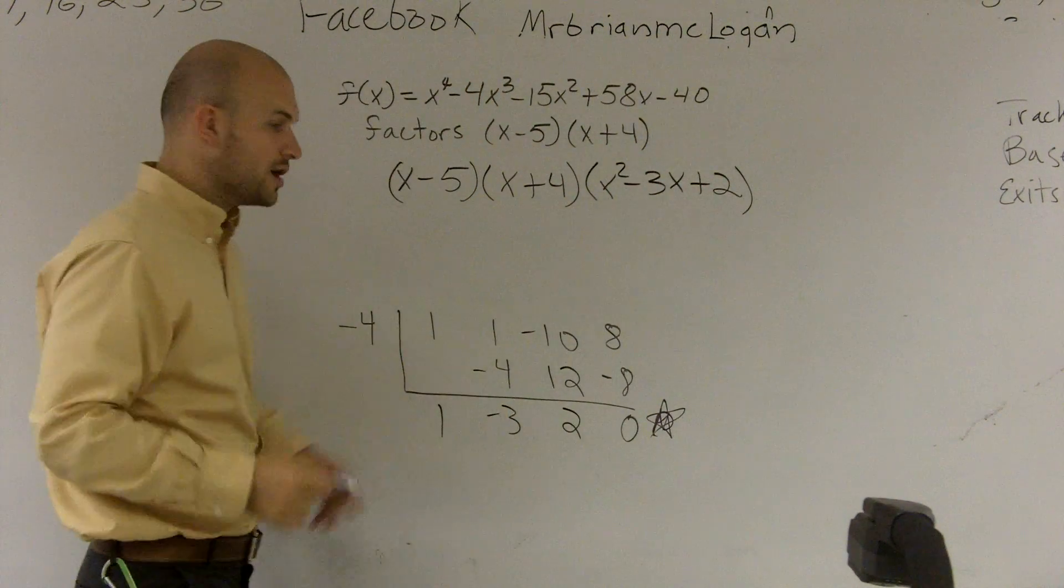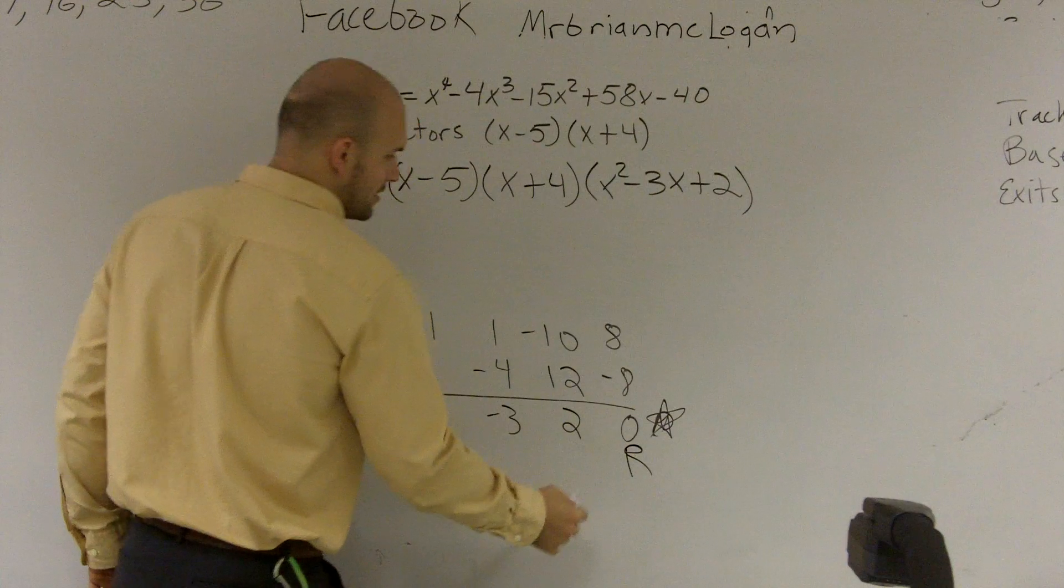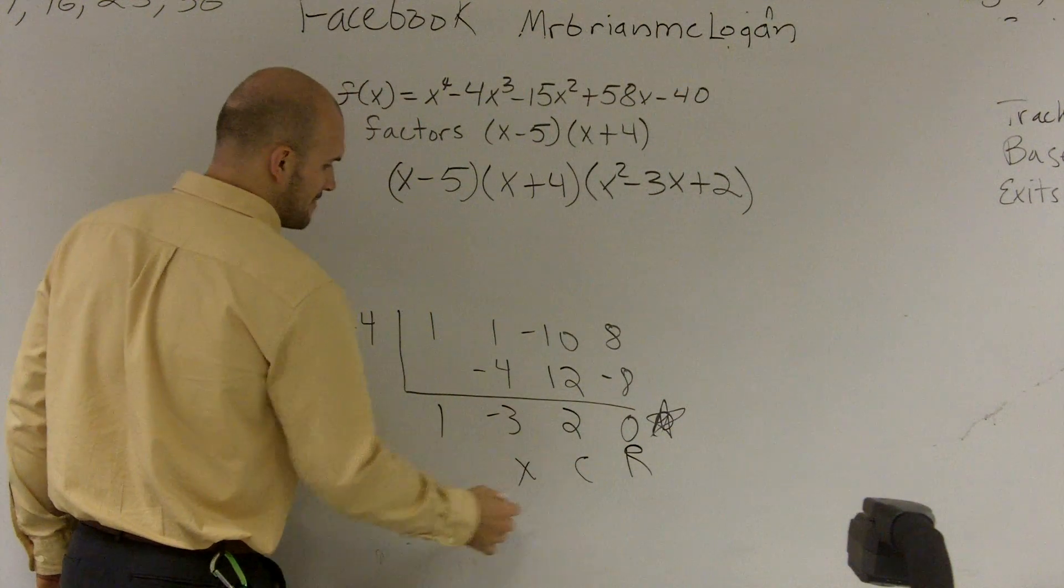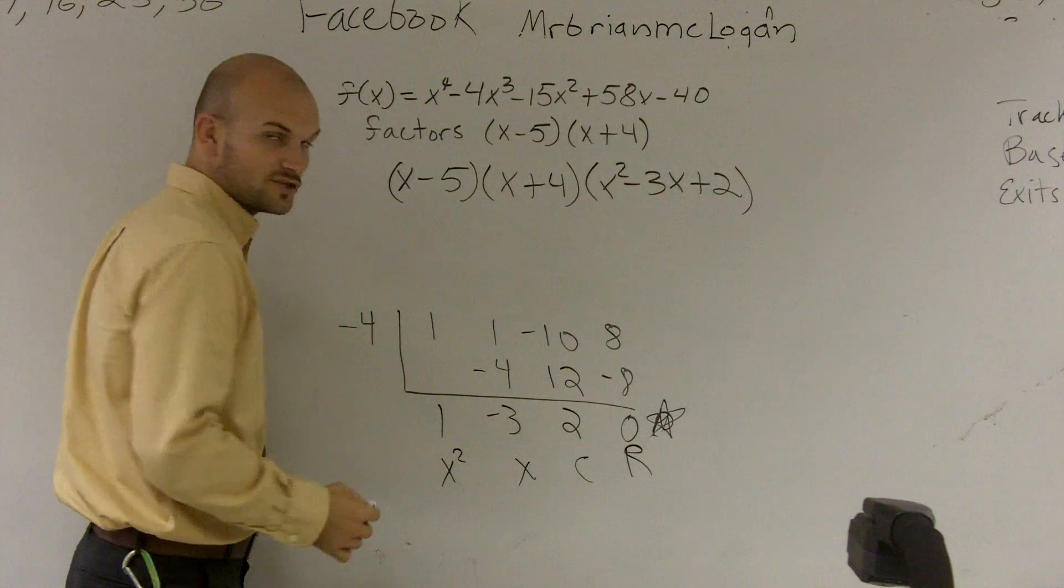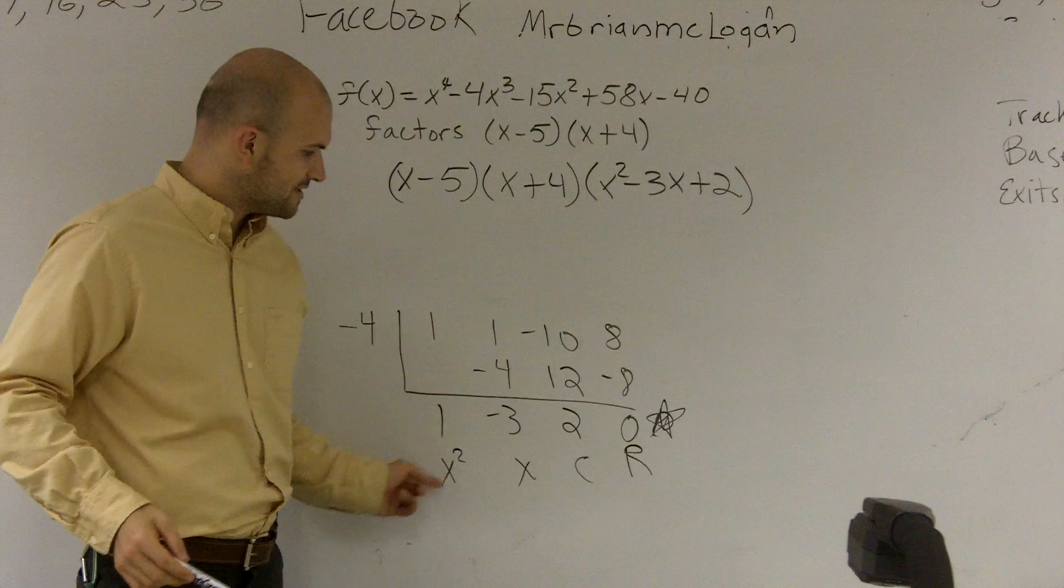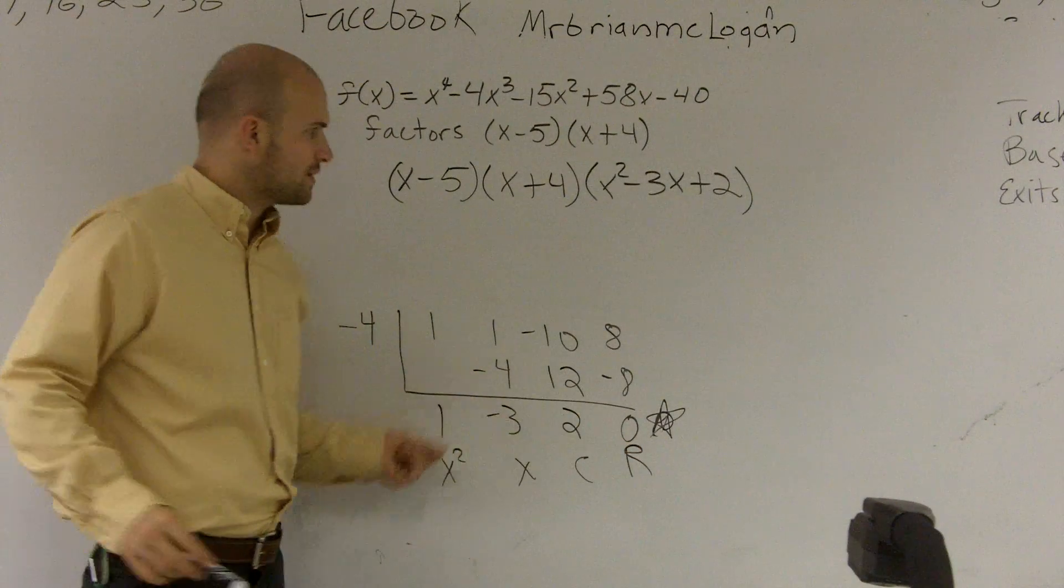For those of you that don't know, if my remainder is r, my next one is my constant, then my linear, then my squared terms. So these are just the coefficients for each one of those terms. You always want to work backwards.